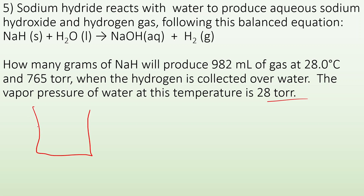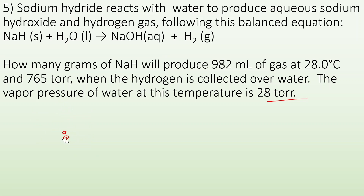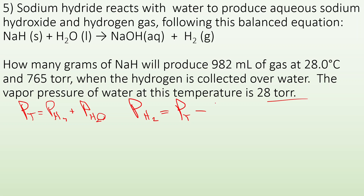When collecting gas over water, there's an inverted tube filled with water and the reaction leaves bubbles into it. In that space there is the gas but also water vapor. So we have to account for that — the pressure we use needs to be just the gas we're interested in. The pressure of H2 equals total pressure minus the vapor pressure of water: 765 − 28 = 737 torr for H2.